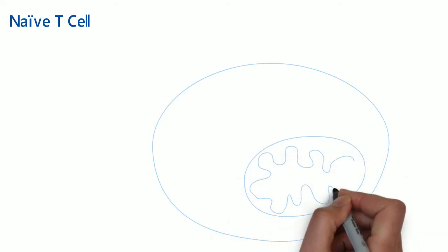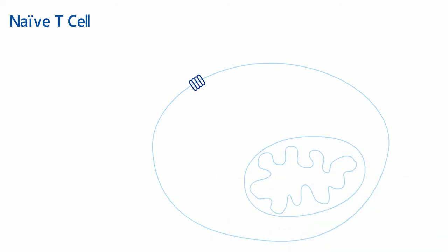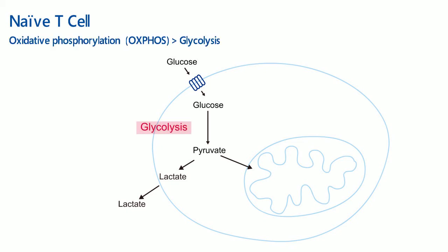Naive T-cells are largely in quiescent and surveillance condition, which have limited biosynthetic needs. They are mainly engaged in oxidative phosphorylation, a process in mitochondria involving the oxidation of nutrients to produce ATP.